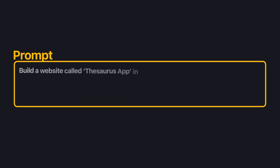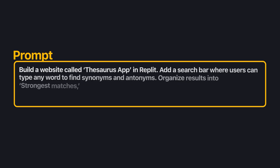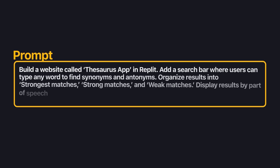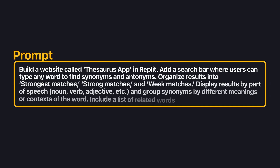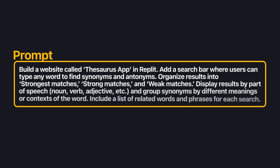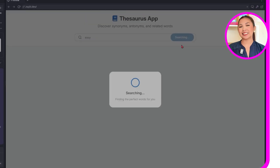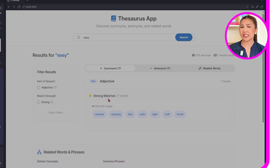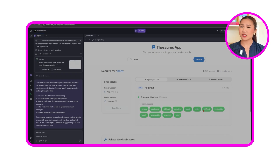Build a website called Thesaurus App in Replit. Add a search bar where users can type any word to find synonyms and antonyms. Organize results into strongest matches, strong matches, and weak matches. Display results by part of speech — noun, verb, adjective, etc. — and group synonyms by different meanings or context of the word. Include a list of related words and phrases for each search. This is the heart of the app: type in any word and you immediately get a clean, organized breakdown of synonyms and antonyms, with matches grouped by strength.